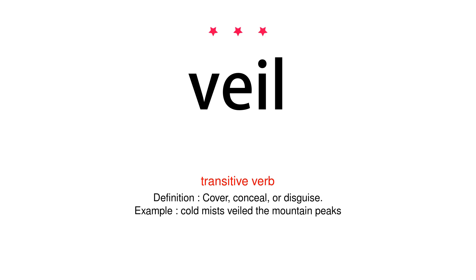Transitive Verb. Definition: Cover, conceal, or disguise. Example: Cold mists veiled the mountain peaks.